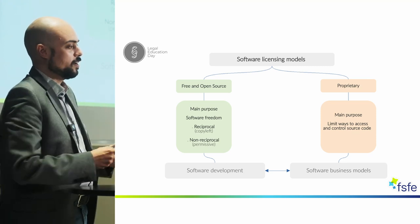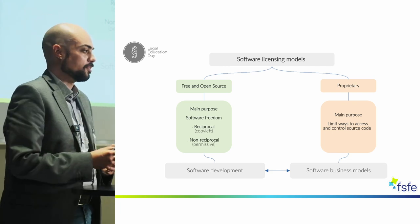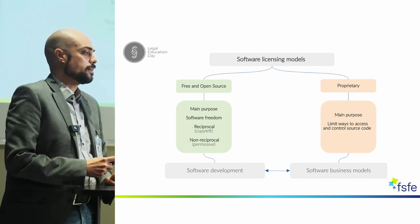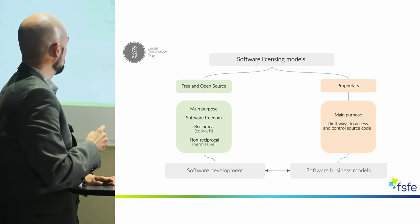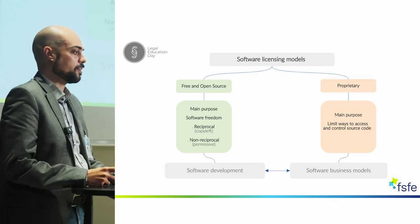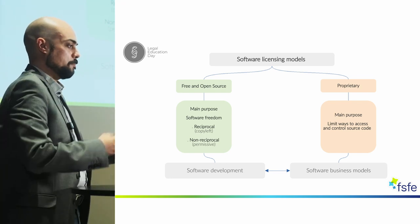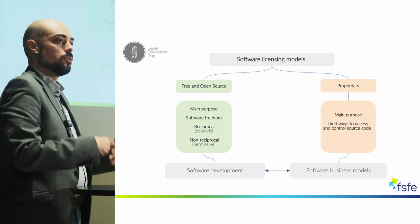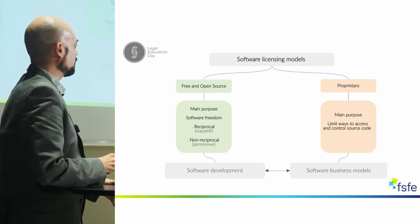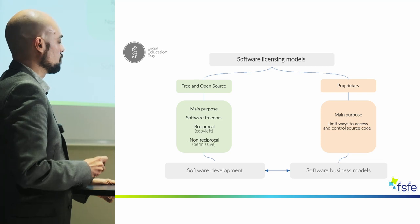We went over this already today, but I'd like to repeat it because it's important for this talk. When we talk about license models, we have basically two. We have the proprietary one, whose main purpose is limited ways to access and control source code. And we have the free and open source, whose main purpose is software freedom — and that can be further classified into reciprocal licenses, also called copyleft, and non-reciprocal licenses, called permissive. Bear in mind that when you choose the type of license — whether reciprocal or non-reciprocal, or even proprietary — it will directly affect how the development of your software is impacted, as well as some software business models.